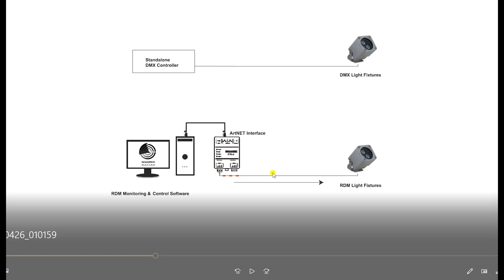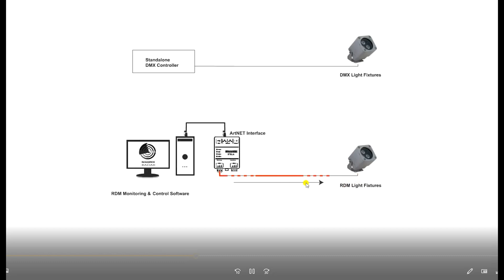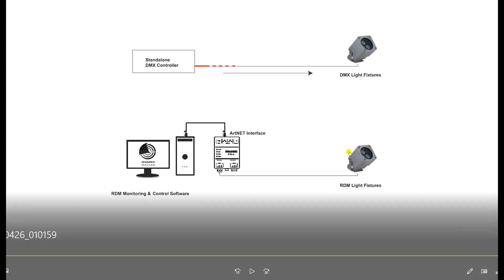The RDM system can send the standard DMX signal protocol commands to the light fittings, but it can also collect information back from them. This makes it bidirectional. There is a lot of information you can get from light fittings through RDM — we are going to see what kind of information that is.